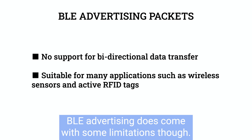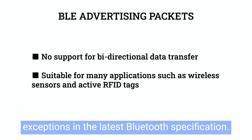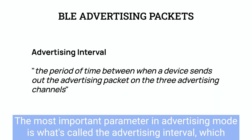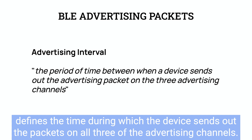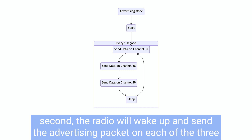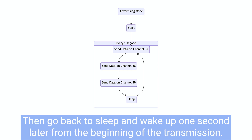BLE advertising does come with some limitations, though. For example, the inability to support bidirectional data transfer, with some exceptions in the latest Bluetooth specification. Still, it's perfectly suitable for many types of applications, such as wireless sensors and active RFID tags. The most important parameter in advertising mode is what's called the advertising interval, which defines the time during which the device sends out the packets on all three of the advertising channels. For instance, if a device has an advertising interval of one second, then every one second the radio will wake up and send the advertising packet on each of the three primary advertising channels — 37, 38, and 39 — then go back to sleep and wake up one second later from the beginning of the transmission.